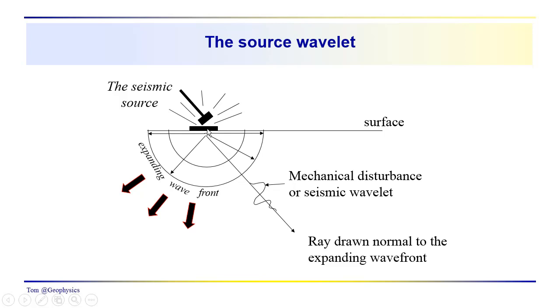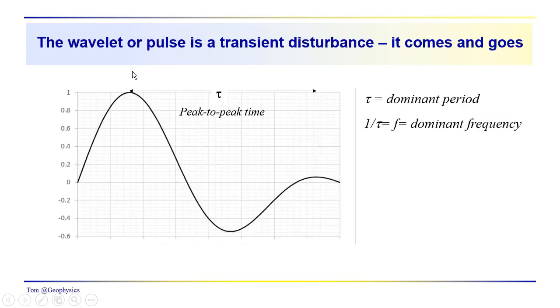So we've got a source. We have an expanding wave front here. Along the edge of that wave front is the transient mechanical disturbance. It comes and goes.